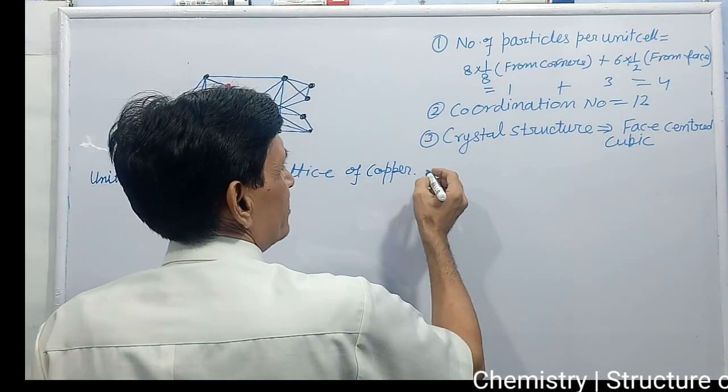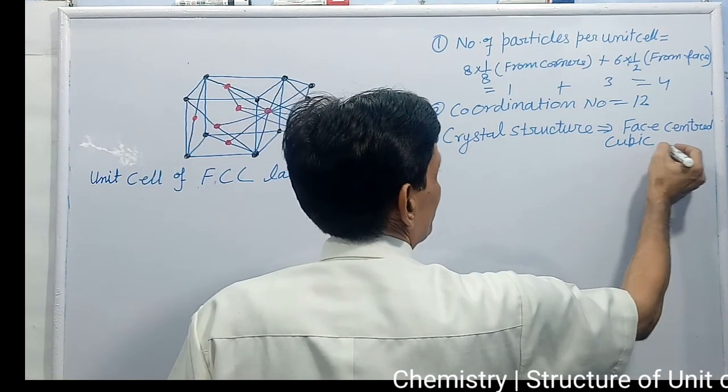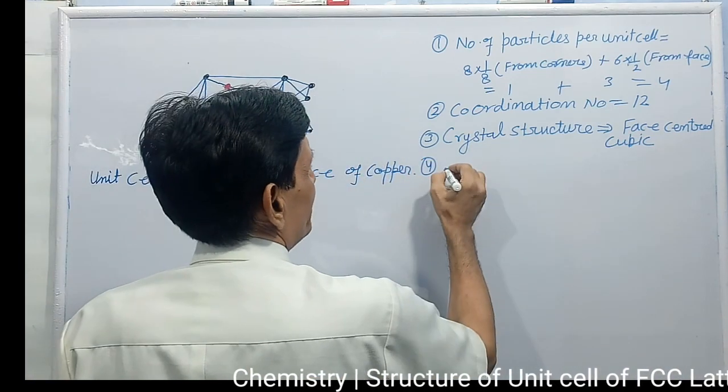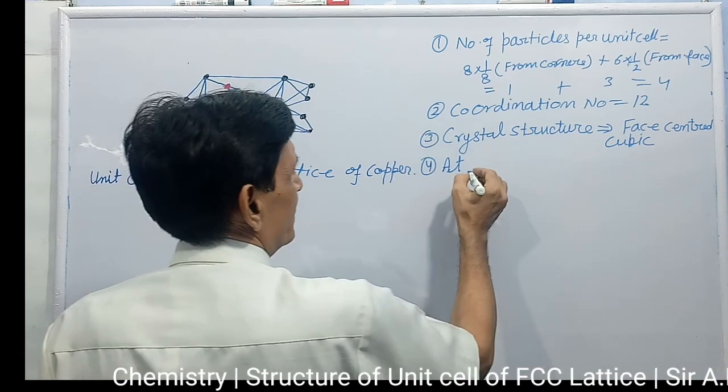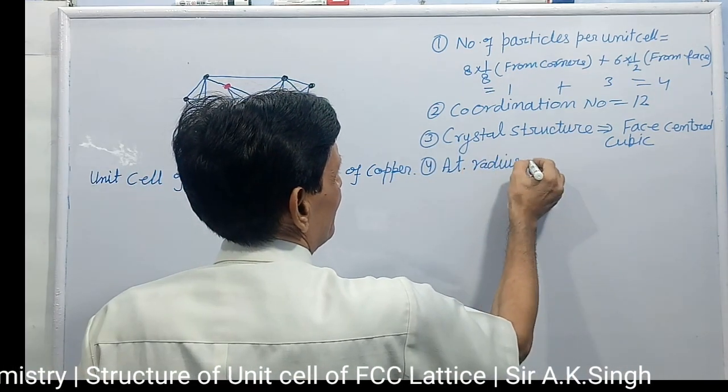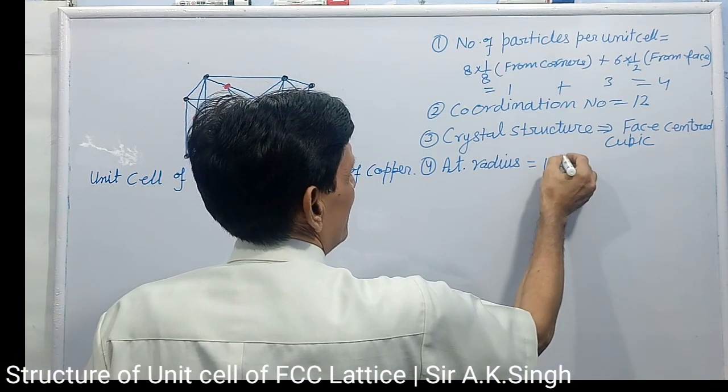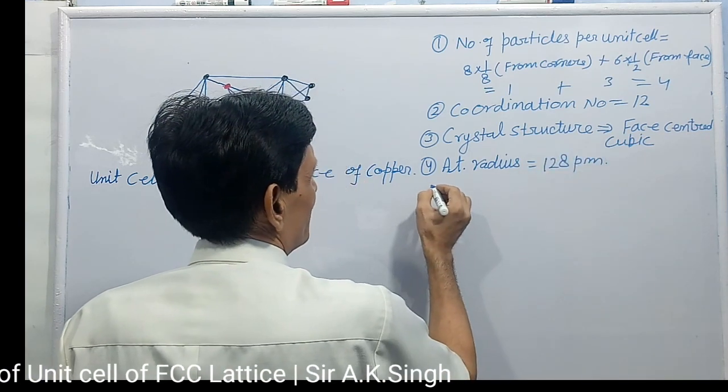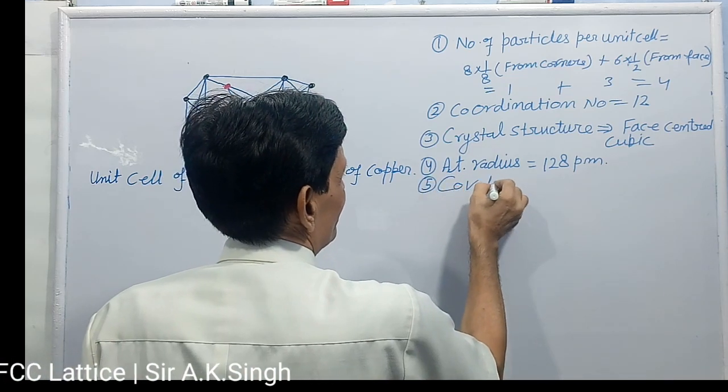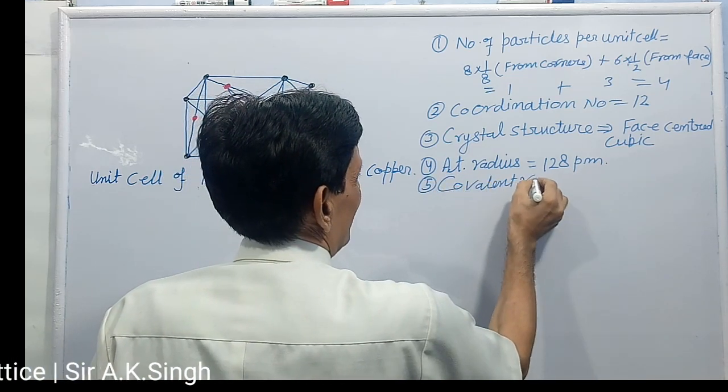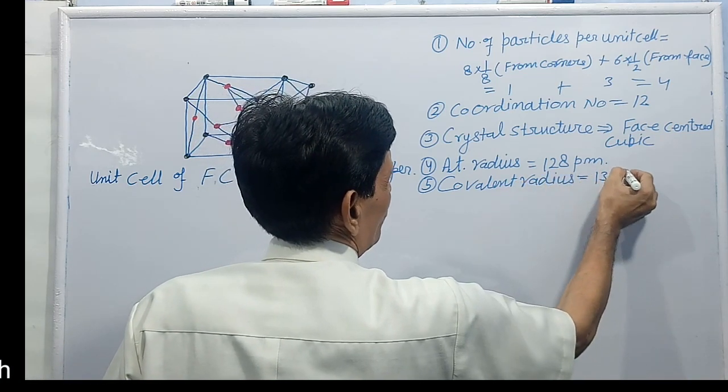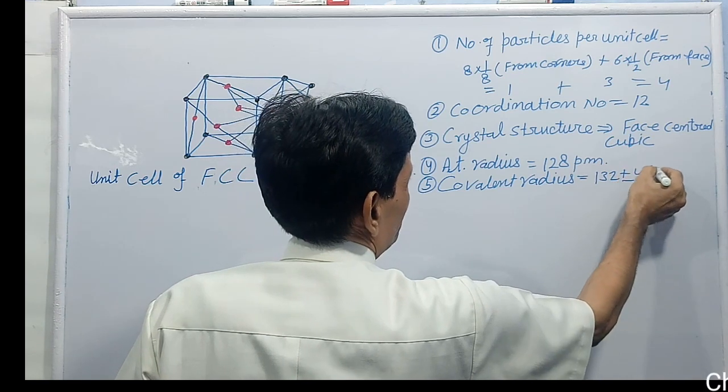Now next is number 4, atomic radius, very important for this arrangement. Atomic radius 128 picometer approximate. Covalent radius, covalent radius 132 plus minus 4 picometer.